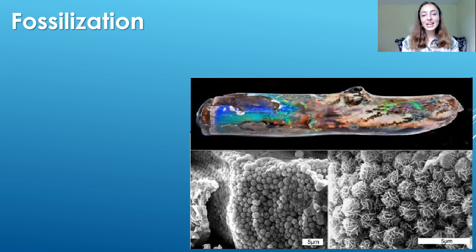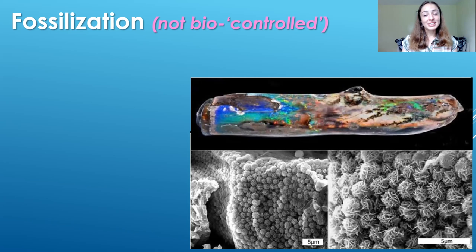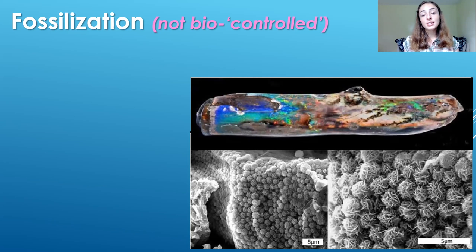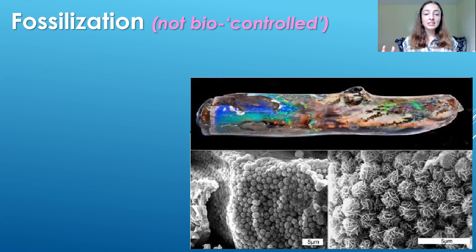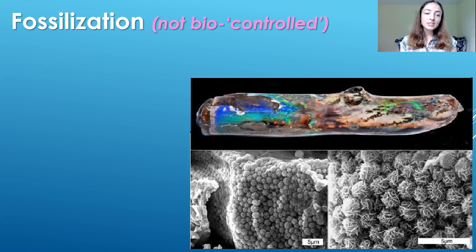Moving to fossilization — this is not technically a biologically controlled mineralization process. Once an organism has died and it comes time to fossilize, it either gets degraded and not preserved, or it can become fossilized in the rock record. Since the organism is dead, it can't be controlling mineralization. Instead, the process might be biologically induced, or something different altogether. But the modes of fossilization we'll talk about today are thought to be at least biologically induced.